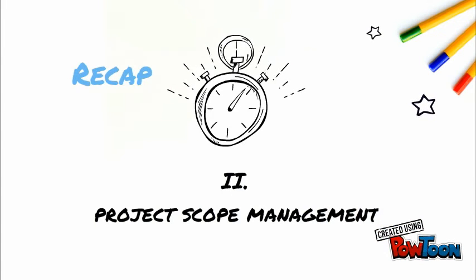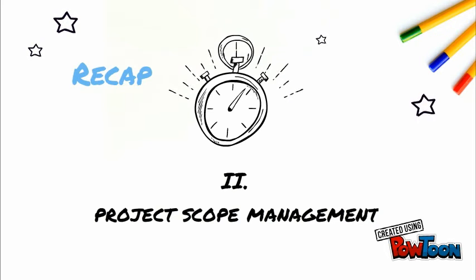The knowledge area of scope management includes the processes required to ensure that the project includes all the work, and only all the work required to complete the project successfully. This includes documenting a list of specific project goals, deliverables, tasks, costs and deadlines.